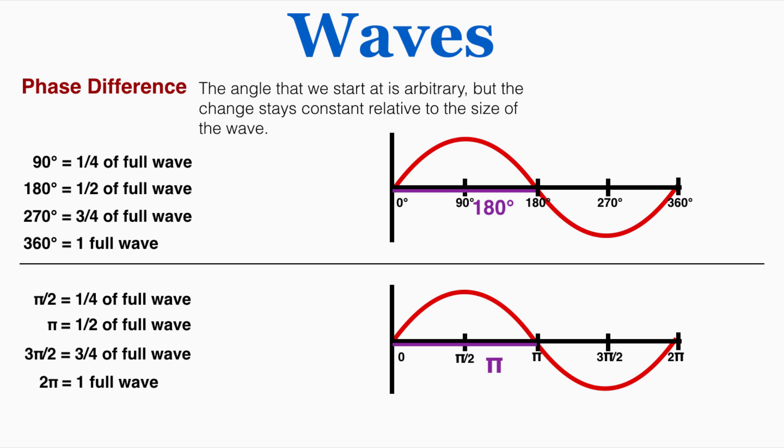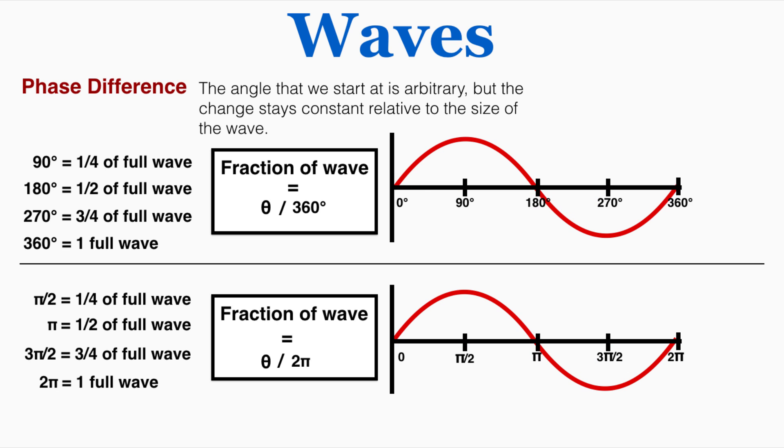180 degrees goes with half the wave. 270 goes with three quarters of the wave. And 360 goes with the full wave. We can now understand specific fractions of a wave as being equal to specific angles over the full wave.